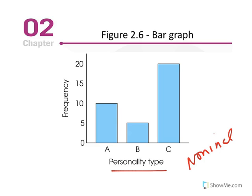So all we're saying here is given a survey of different individuals and identifying their personality types, we can see that there were 10 individuals that identified as personality type A, 5 individuals as personality B, and there were 20 individuals that identified as personality type C.